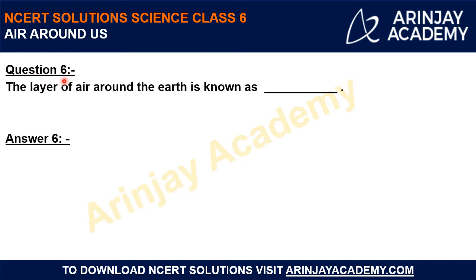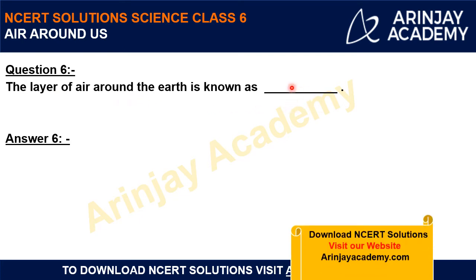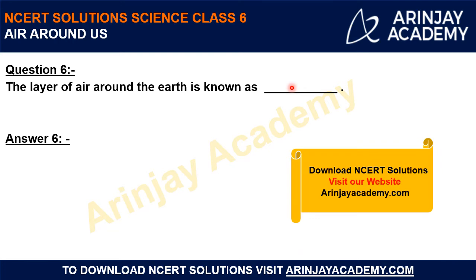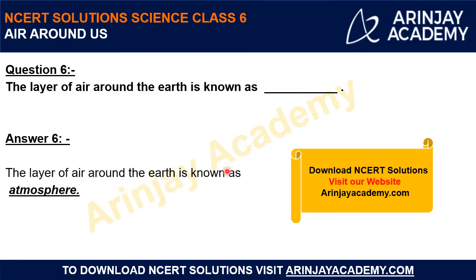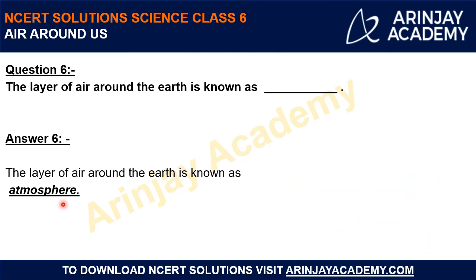Question 6: The layer of air around the earth is known as what? We call it the atmosphere. Our earth is surrounded by a thin layer of air that extends up to many kilometers above the surface of the earth. These layers of air act as a blanket surrounding the earth. It protects the earth from harmful radiations and makes life possible on our planet. So we call these layers of air the atmosphere.